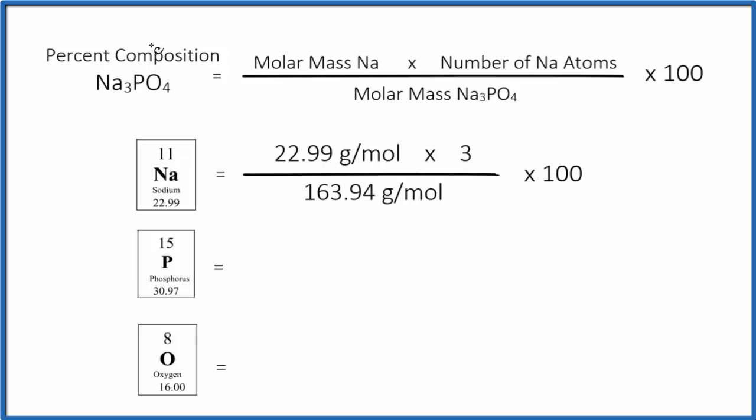To find the percent composition by mass of sodium in sodium phosphate, we find the molar mass for sodium. That's right here, 22.99 grams per mole, also called the atomic mass. We multiply that by the number of sodium atoms. We have 3, so we multiply that by 3.